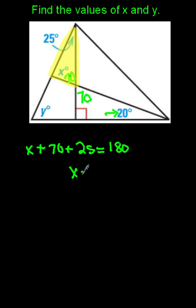So when I simplify, this gives me X plus 95 equals 180, and then when I subtract 95 on both sides, I end up with X equals 85. So X has a value of 85 degrees.